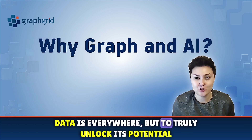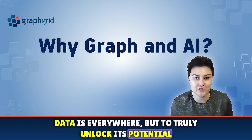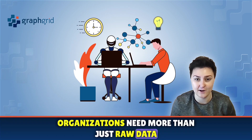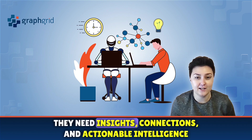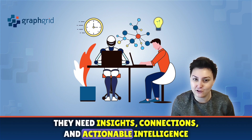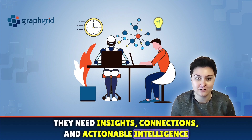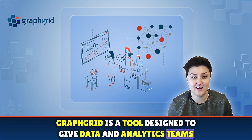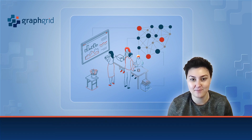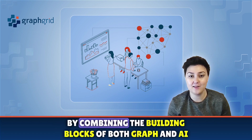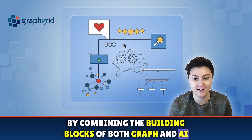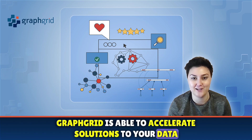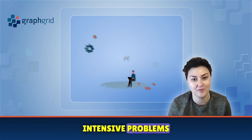Data is everywhere, but to truly unlock its potential, organizations need more than just raw data. They need insights, connections, and actionable intelligence. GraphRid is a tool designed to give data and analytics teams the ability to gain just that. By combining the building blocks of both Graph and AI, GraphRid is able to accelerate solutions to your data-intensive problems.